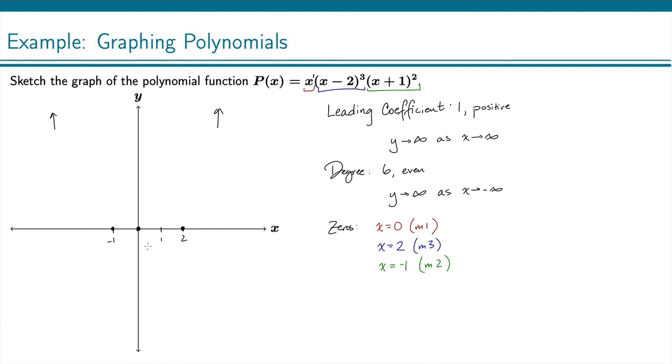And I connect my end behavior to my zeros using the proper behavior near each of these zeros. So just next to these, I'm just going to list what they look like. So with the multiplicity of 1, that is x to the 1, that's just a line. So it's going to look like a line as we cross x equals 0.